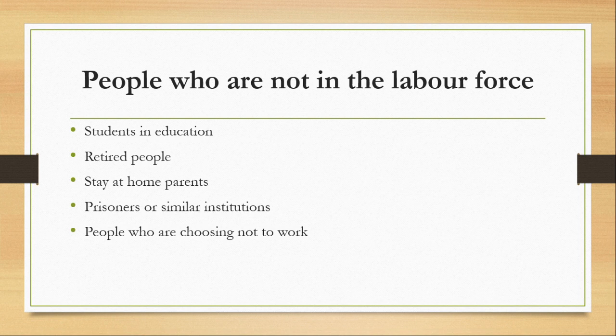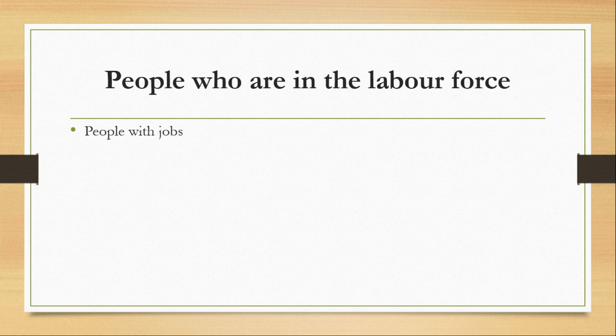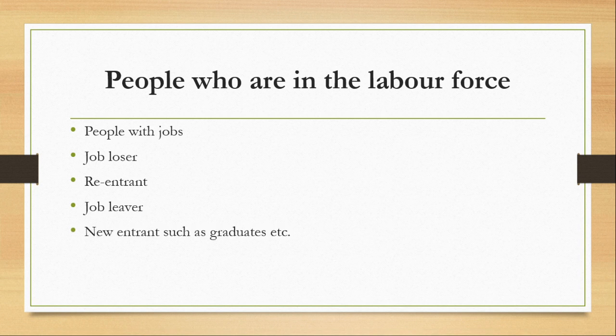Now let's look at the people who are in the labor force. We are talking about people with jobs — employed people. We are also talking about job losers: those who lost their jobs but are still looking for work — we call these people unemployed. Reentrants are those who lost their jobs and came back to look for work. Job leavers are those who are leaving their job but are still in the labor force. New entrants such as graduates — once you graduate, you will be in the labor force because you will be looking for a job and are no longer a student.